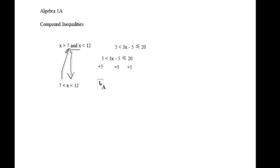So we get 10 is less than 3x, which is less than or equal to 25. And then what you can do is you can solve both sides by dividing by 3 all at the same time. If we did divide by negative 3, you would have to switch both inequalities.